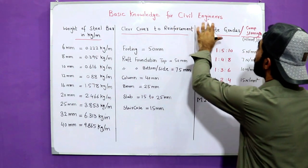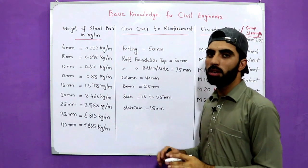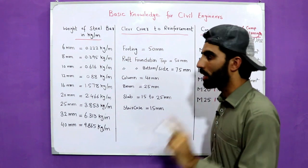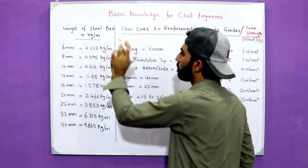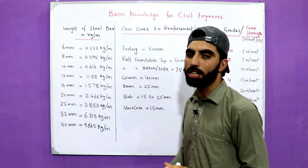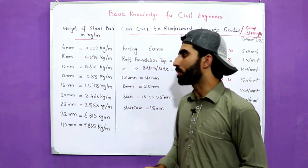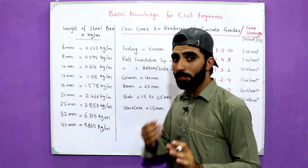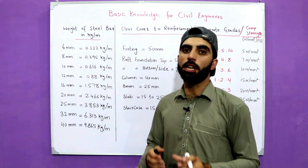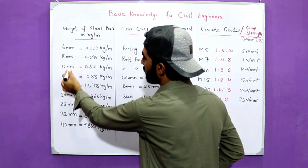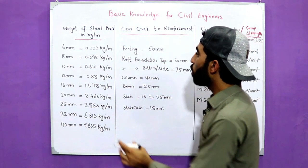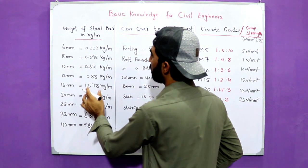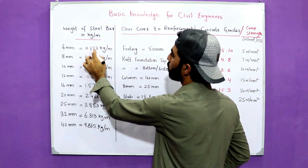Basic knowledge for civil engineers - this knowledge can help you on construction sites. The first topic is weight of steel bar in kg per meter. We have different diameters of steel bars in millimeters: 6mm, 8mm, 10mm, up to 40mm.